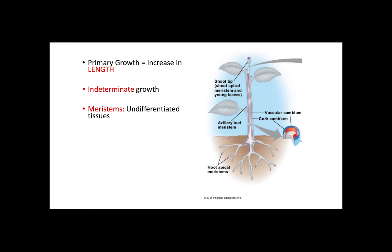A meristem corresponds to undifferentiated groups of cells or tissues. For primary growth, the most important meristem is the apical meristem, found both at the tip of the stem and at the tip of the roots.